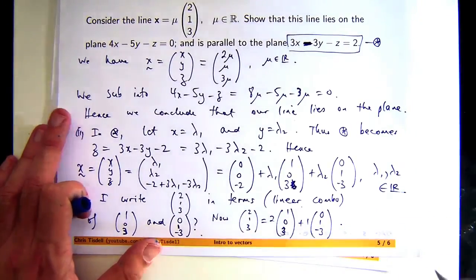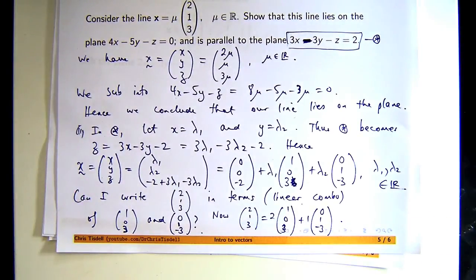So what does that mean? It means that this vector (2, 1, 3) lies in the span, in the span of the two vectors. It lies in the same plane that goes through the origin.